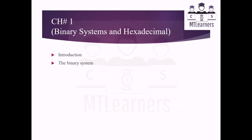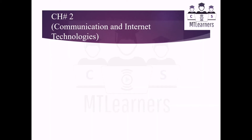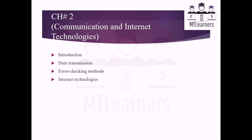Chapter 1 is Binary Systems and Hexadecimal. An introduction of both number systems will be given, then uses of binary and hexadecimal systems will be discussed, and measurement of the sizes of computer memories will be studied. In Chapter 2, Communication and Internet Technologies, an introduction of data transmission will be given, then different error checking methods will be explained, and then internet technologies will be discussed.